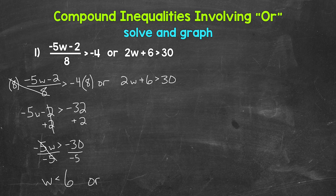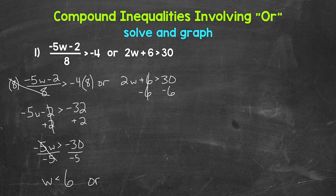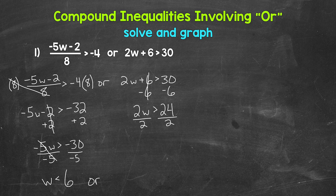Now we need to solve 2w plus 6 is greater than 30. We have multiplication and addition, so we need to undo the addition first using subtraction. Subtract 6 from both sides. The 6s on the left cancel each other out, so we have 2w is greater than 30 minus 6, which gives us 24. Now we need to undo the multiplication using division. Divide both sides by 2. The 2s on the left cancel each other out, so w is greater than 24 divided by 2, which gives us 12.